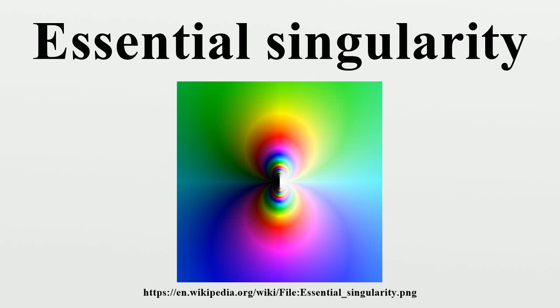Similarly, if the limit of F does not exist but the limit of 1/F exists, then A is a pole of F and a zero of 1/F. If neither limit exists, then A is an essential singularity of both F and 1/F.